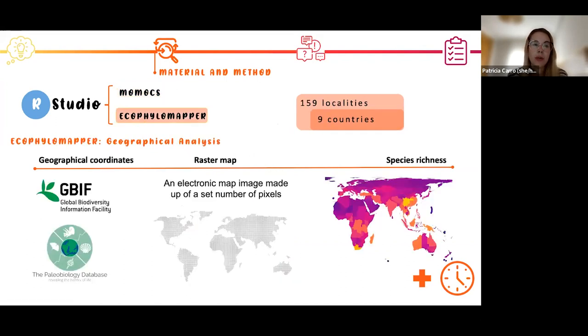To perform the geographical analysis, I'm going to use the same R Studio. But in this case, I'm going to use the ECOSPHERAPPER or EPM package in more than 150 localities from nine different countries. Mostly, they are from Europe and Asia. To obtain the geographical coordinates, we used two different databases, the GBIF and PGDB.